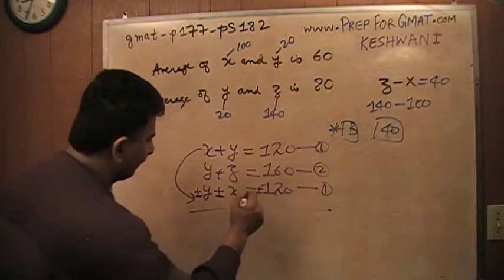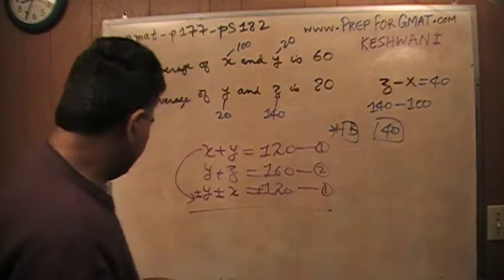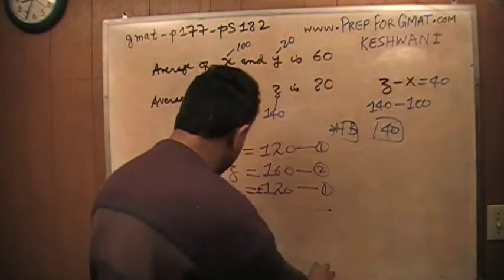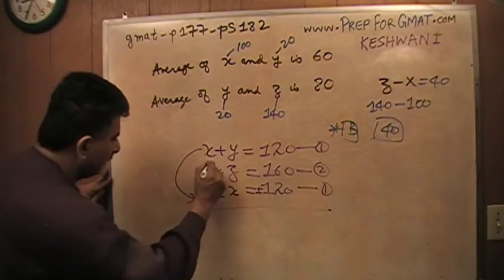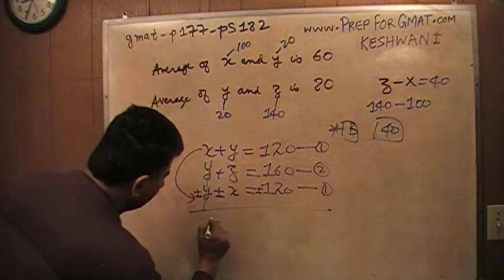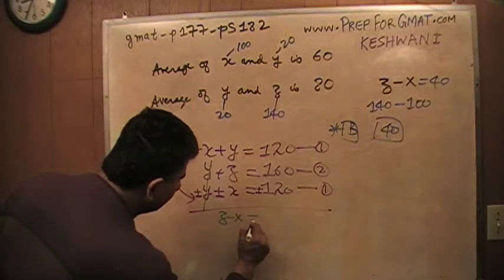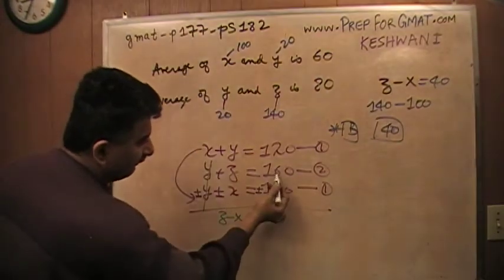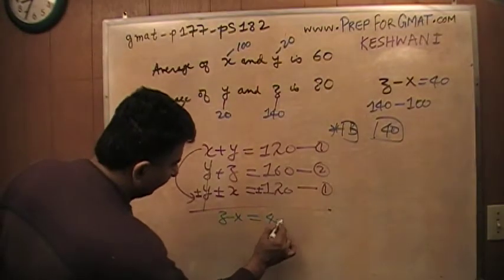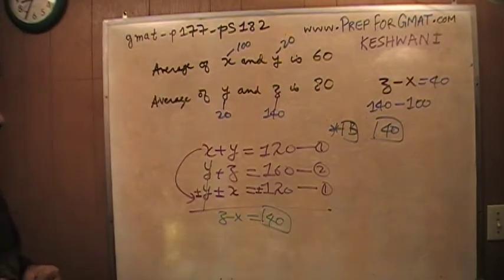This is a plus, becomes minus. Let me change the color again. As you know probably by now, I have a flair for the dramatics. So, here Y minus Y, Y drops out. And then this gives me Z minus X, which is what they're looking for. Z minus X, which gives me 160 minus 120, which is 40. That's it. Voila. That's all it is. All right? That's all it is.